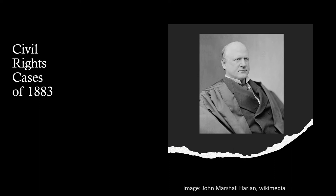Harlan argued that the line between state and private action is often blurred, such as how private railroads provide the government function of facilitating transportation and travel. See John Marshall Harlan's dissent below for his full argument on why he disagreed with the majority and considered the Civil Rights Act of 1875 constitutional.